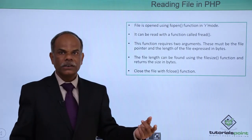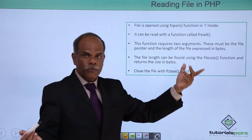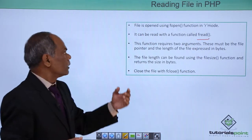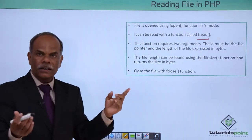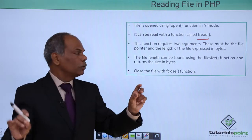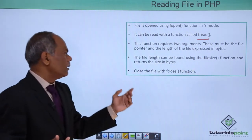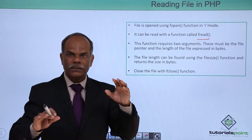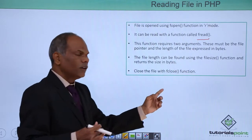You have opened the file with the fopen function and you can close the file with fclose. While reading the file, you have to open it in r mode. You can use the function fread — it requires two arguments: the file pointer returned by the fopen function, and the length of the bytes that you want to read at a time. You can find out the file size with the filesize function, which returns the size in bytes. Then close the file with fclose. So the steps are: open a file using fopen, read the data using fread, and close the file.